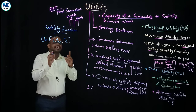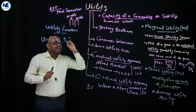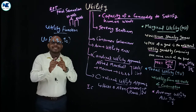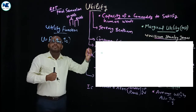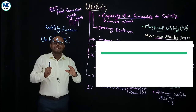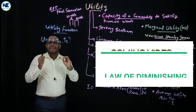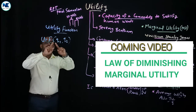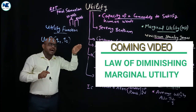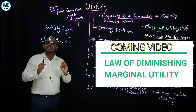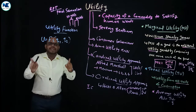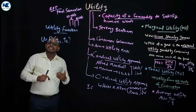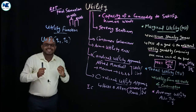Related to marginal utility and total utility, the next important concept is the law of diminishing marginal utility, developed by Alfred Marshall. We will discuss it in detail — including in table format — in the topic of the law of diminishing marginal utility.